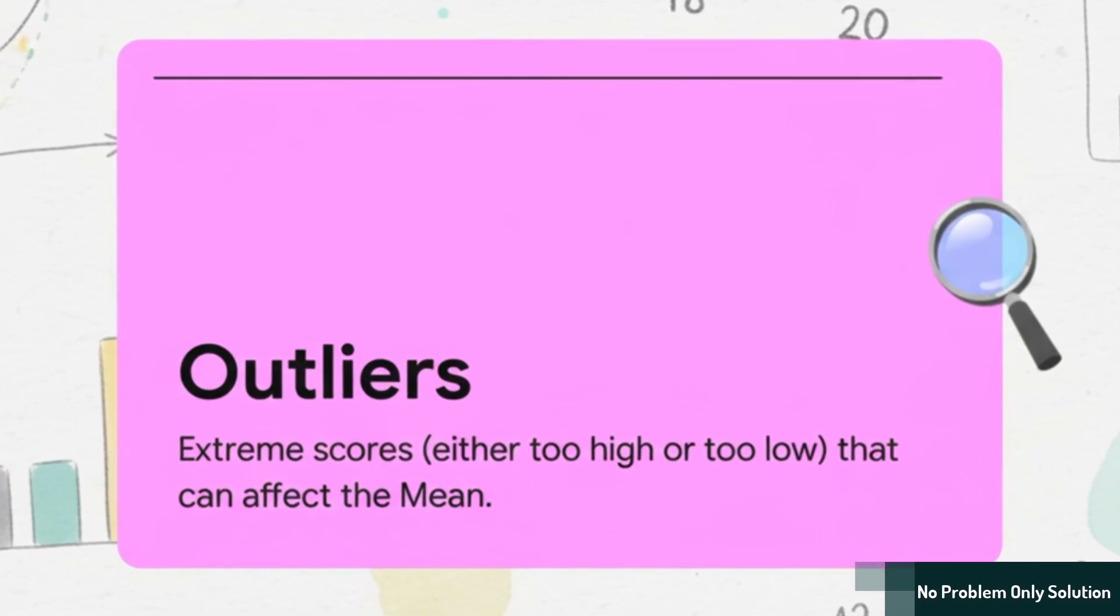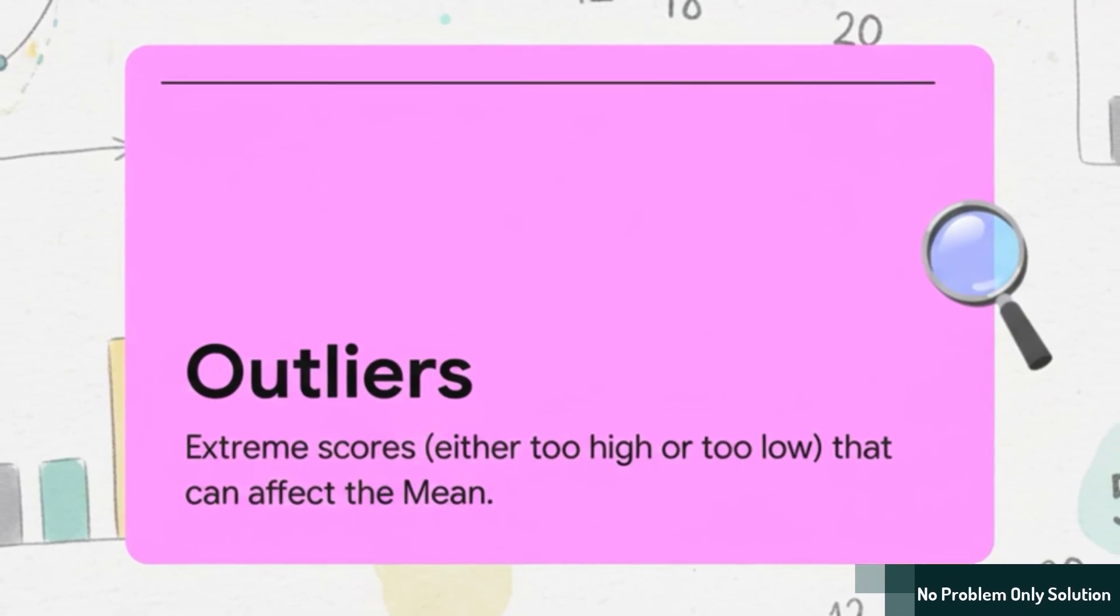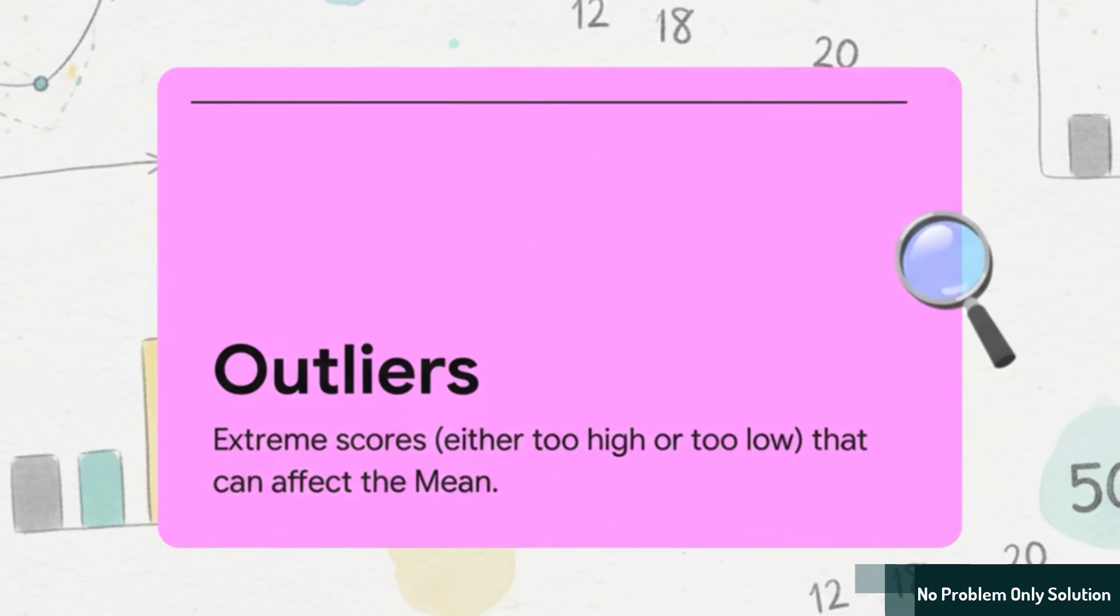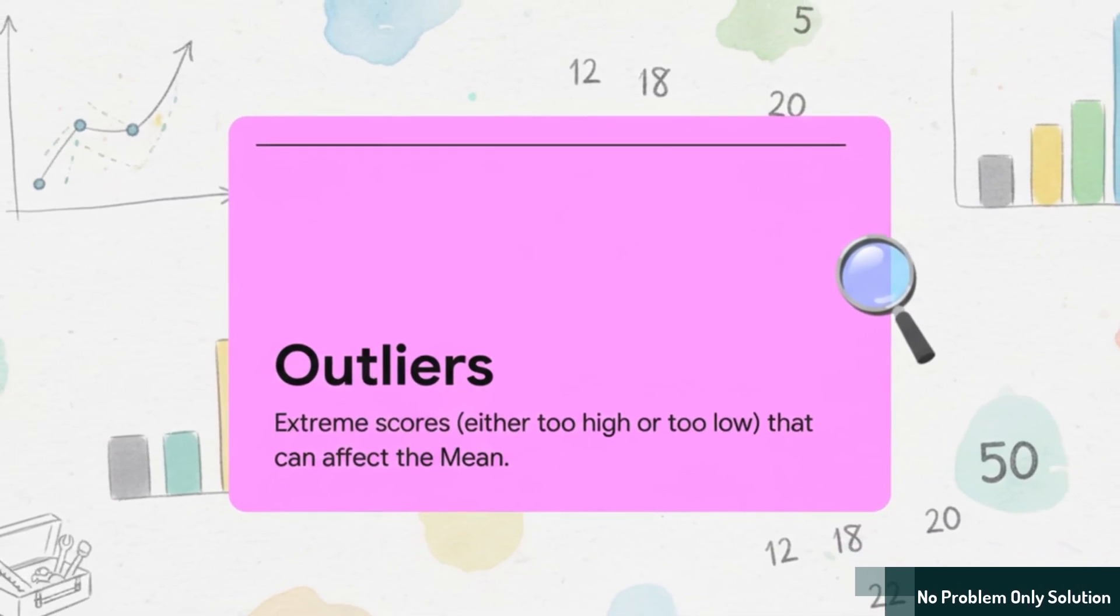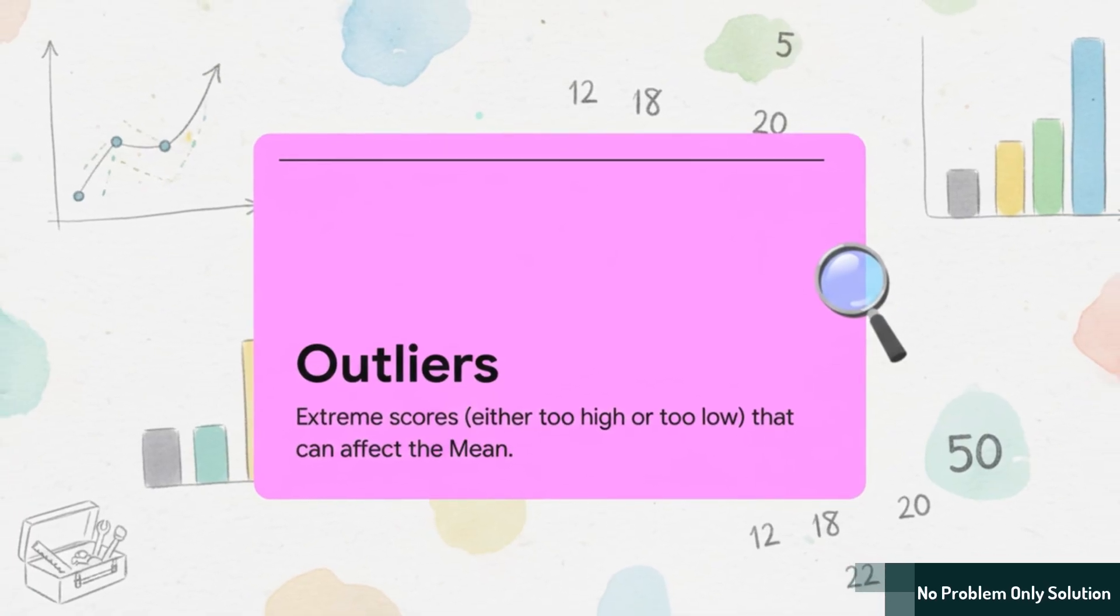An outlier is just an extreme score. It's either way, way higher or way, way lower than everything else. Think about it. What would happen to our mean, that calculated average, if one student totally bombed the test and got a zero instead of an 82?